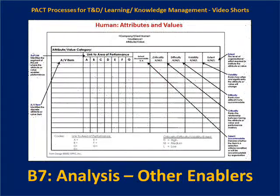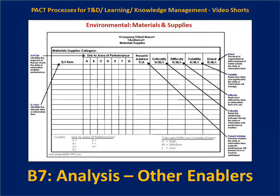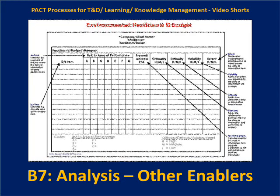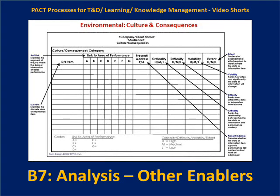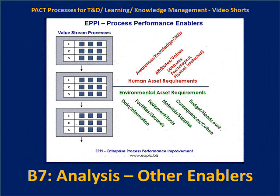We have similar kinds of knowledge and skill matrices for the human attributes and values, as well as for environmental categories: data and information, materials and supplies, tools and equipment, facilities and grounds, headcount and budget, culture and consequences. All of these enablers bring a paper process to life.